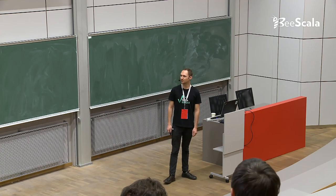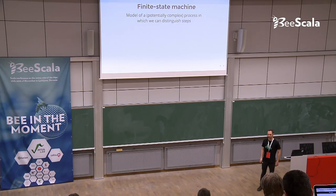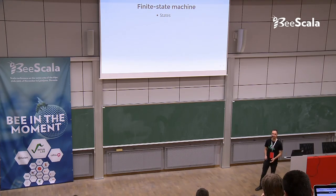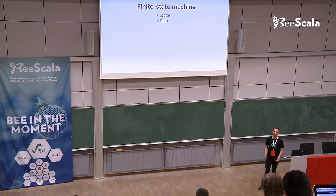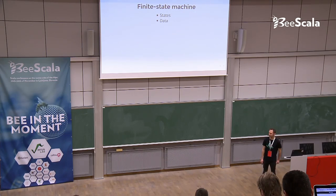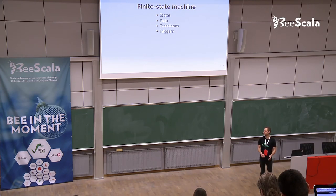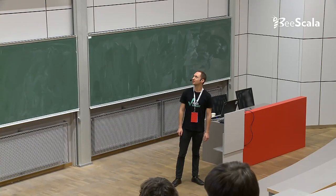What is a Finite State Machine and how does it help you? A Finite State Machine is a model of a process in which we can define some steps. We've got states — a process can be in one state at a time. Along with the state, we've got data, which is the information gathered in the process. Staying in one state forever is pointless, so we've got transitions between states. We need to tell the process what the trigger is — what condition causes a transition from one state to another. These are the four most basic elements of a Finite State Machine.